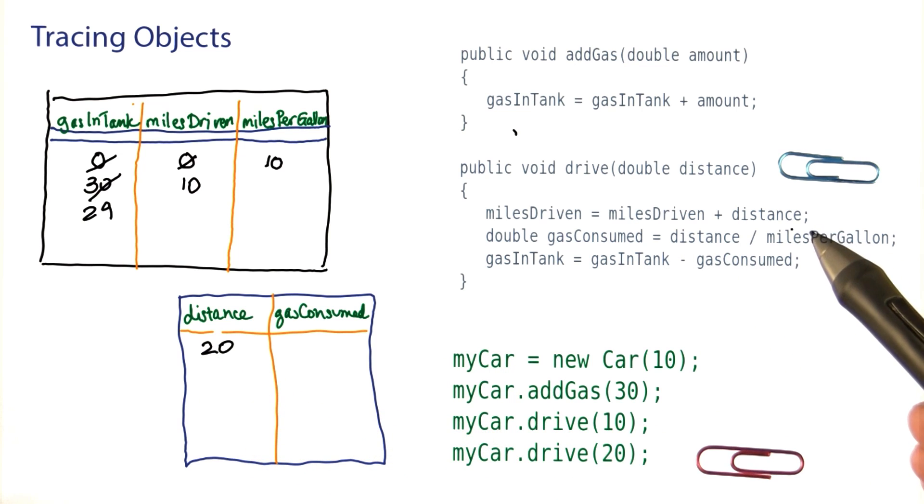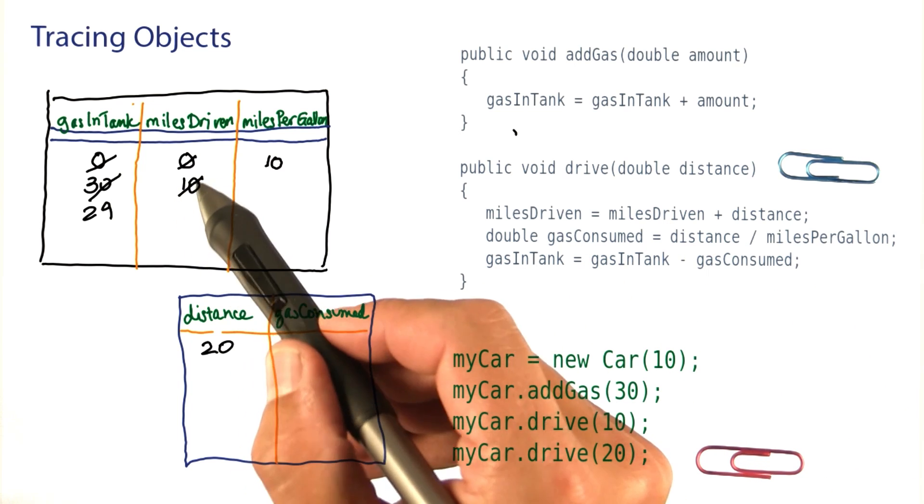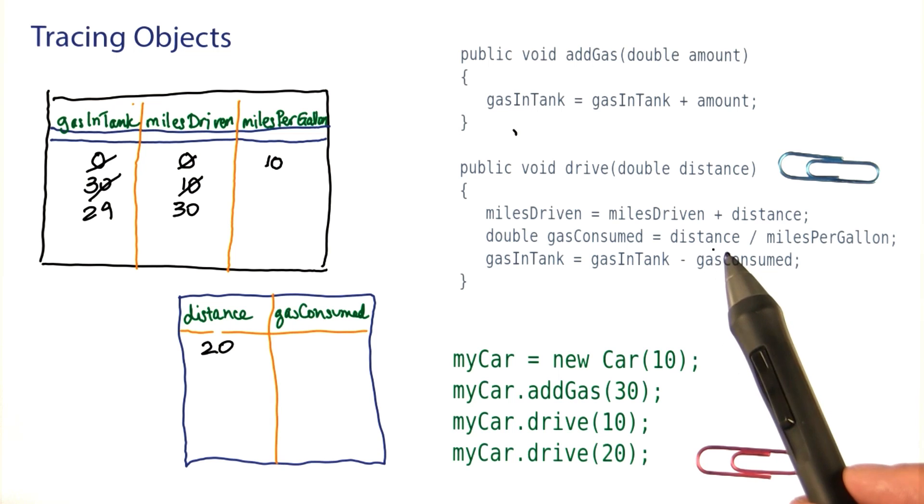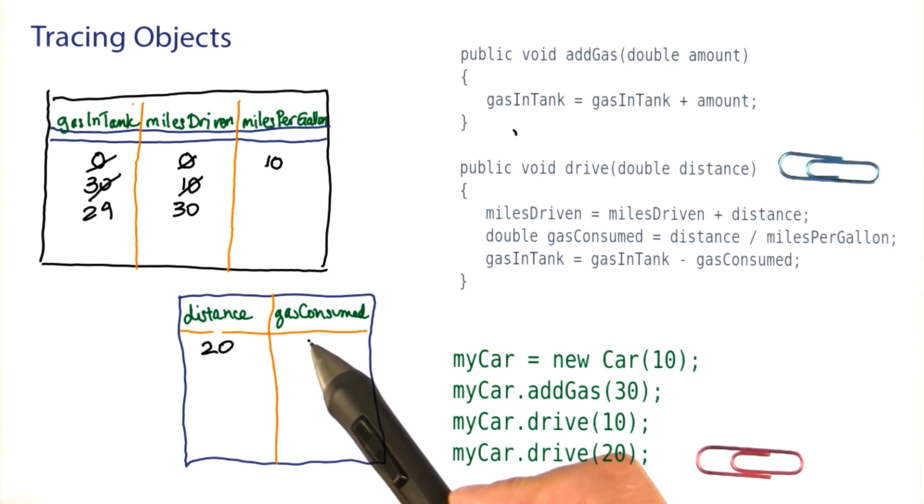Miles driven is miles driven plus distance. Previously it was 10. Now we add 20. Now it becomes 30. Gas consumed is distance over miles per gallon. That's 20 by 10 or 2. Gas in tank was 29 minus 2 is 27.